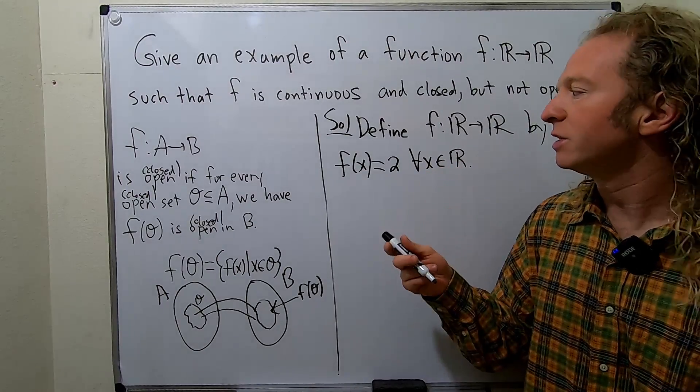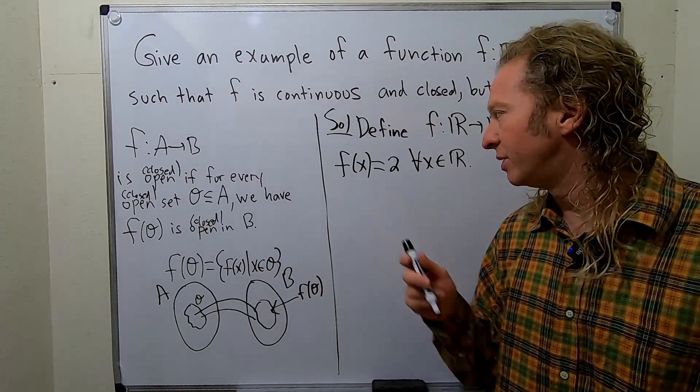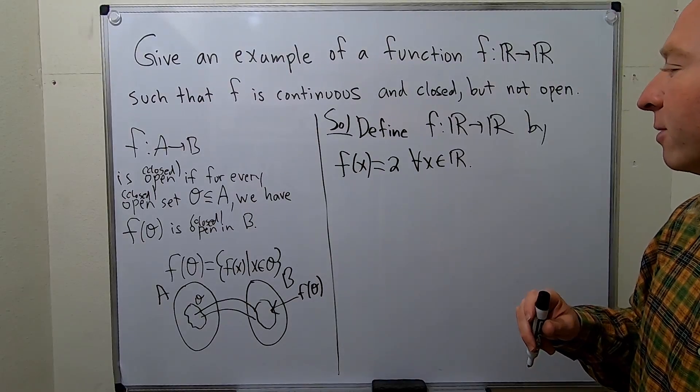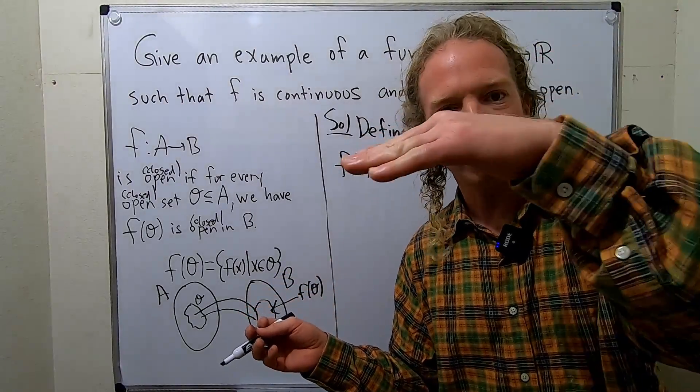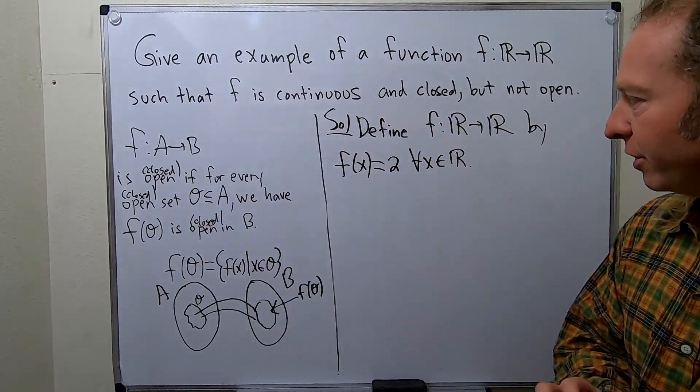So this function is clearly continuous. It's the constant function. So it's continuous, no problems there. Even from like an elementary calculus viewpoint, it has no holes or breaks. It's a horizontal line, beautifully continuous.